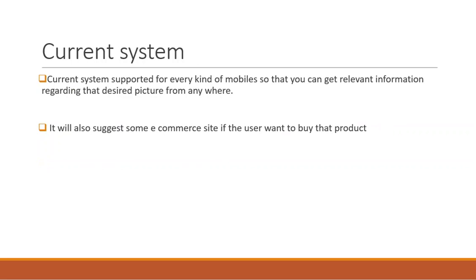Now, the current system has overcome these disadvantages. The current system supports every kind of mobile so that you can get relevant information regarding a desired picture from anywhere. It also suggests e-commerce sites if the user wants to buy a product. By overcoming the existing system's disadvantages, the updated service supports every kind of mobile, not only providing desired information about the picture but also with a privacy policy.